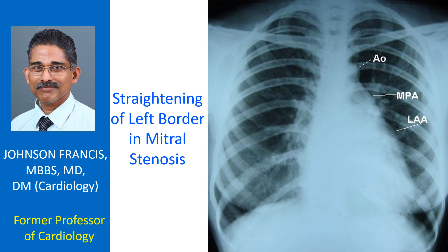The uppermost portion on the left cardiac border is the aortic knuckle. The next slight bulge is the main pulmonary artery, and the left atrial appendage is seen below that. The latter two regions are usually concave, and the obliteration of the concavity contributes to the so-called straightening of the left border.